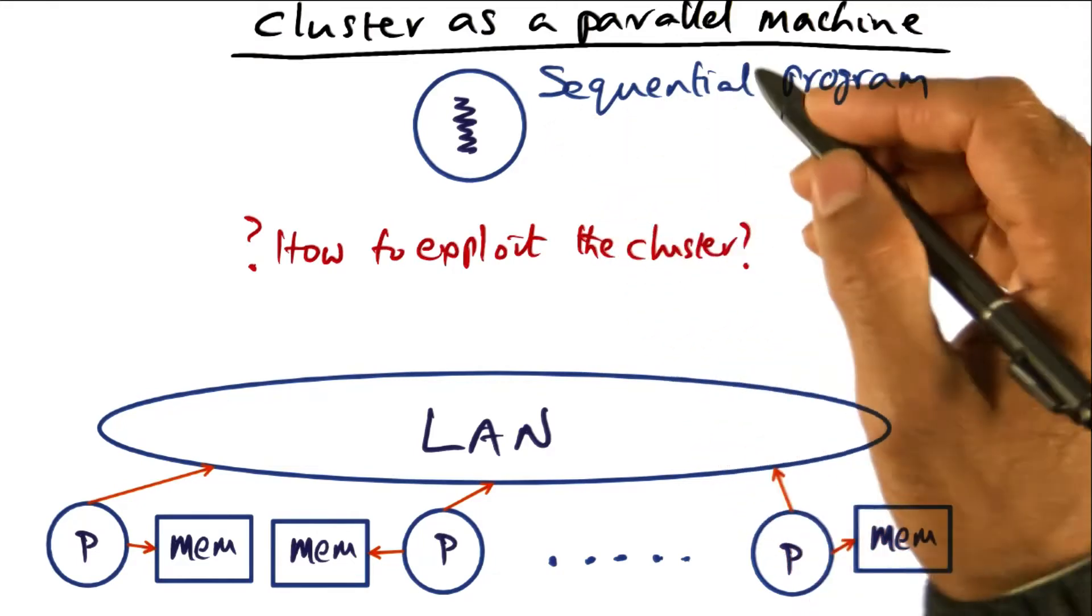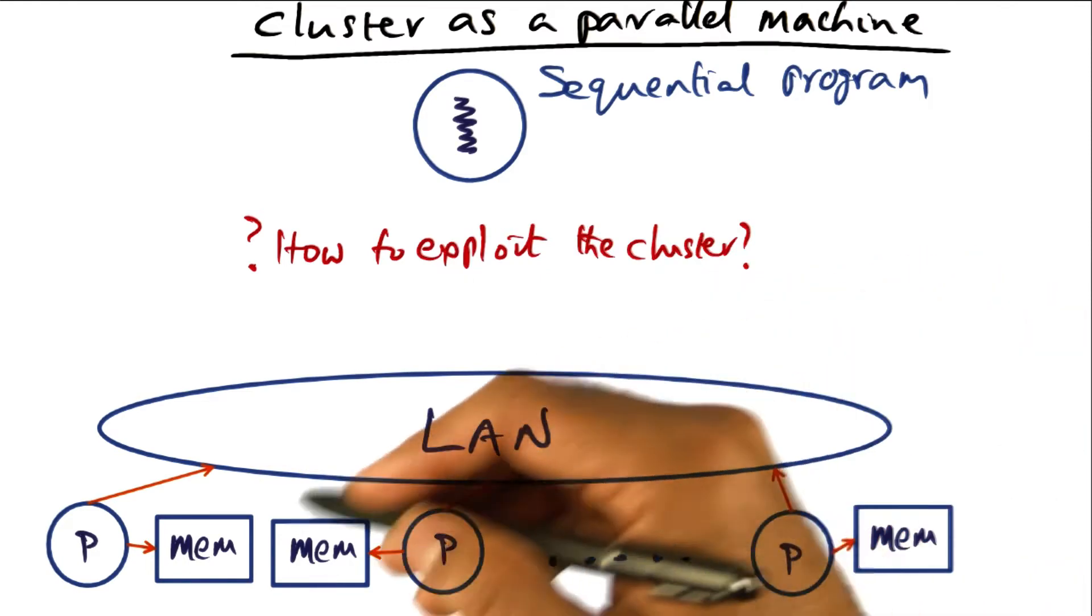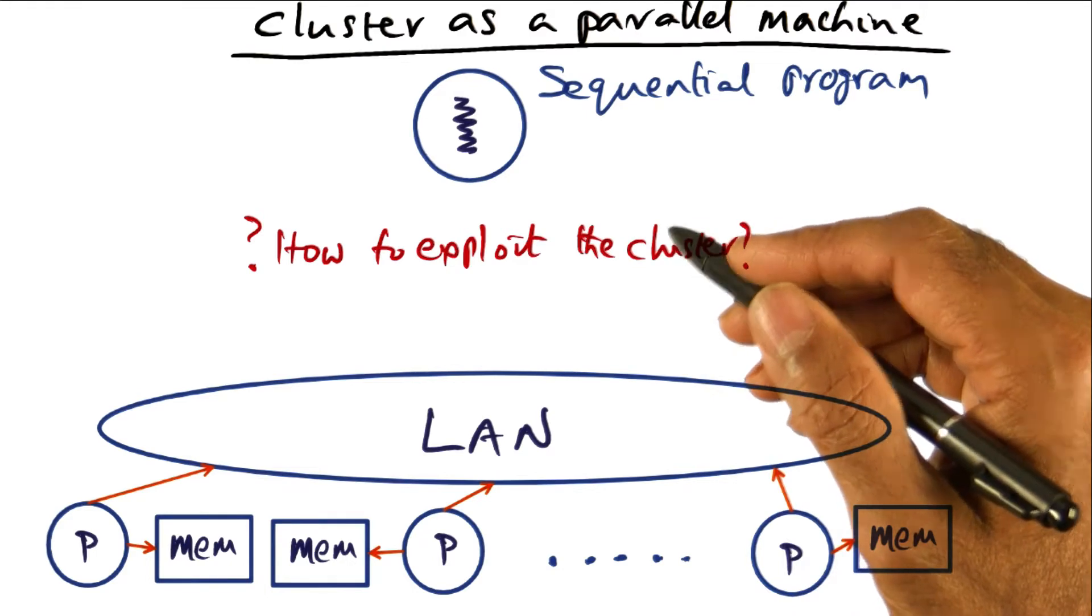Now suppose the starting point is a sequential program. How can we exploit the cluster? We have multiple processors. How do we exploit the cluster if the starting point is a sequential program?